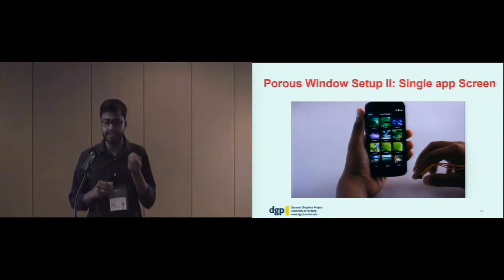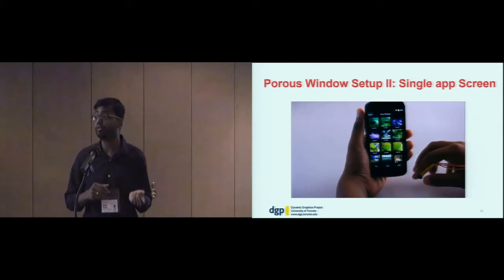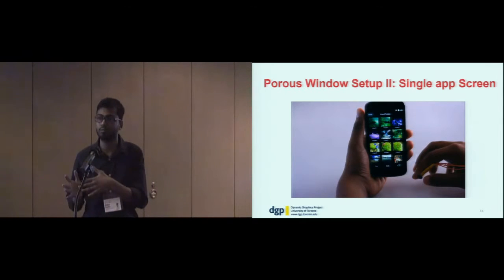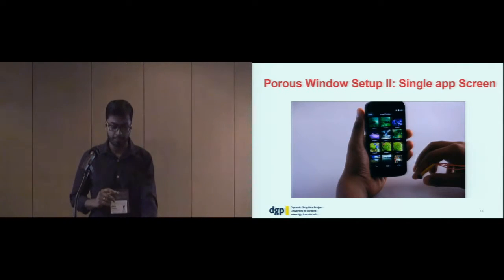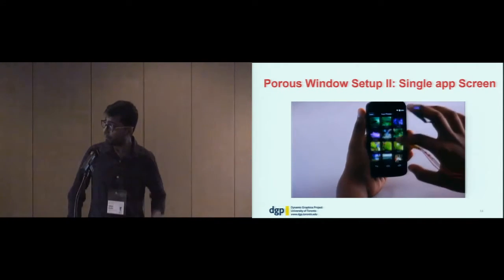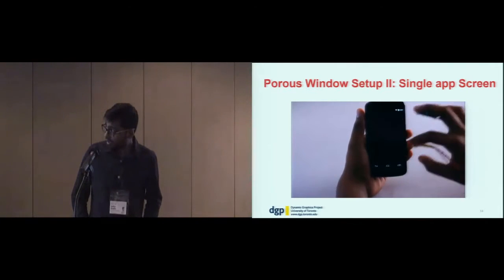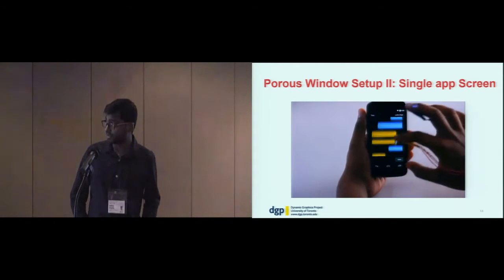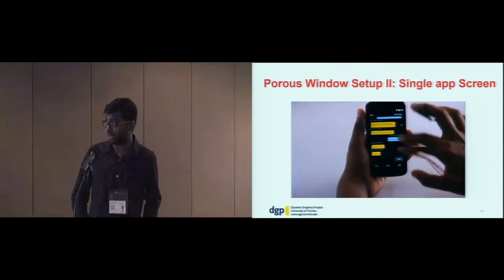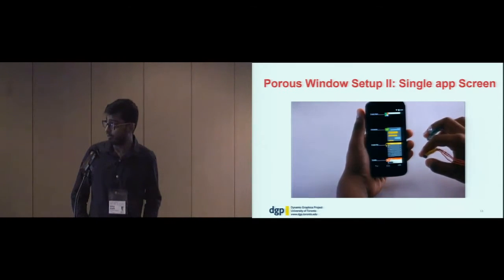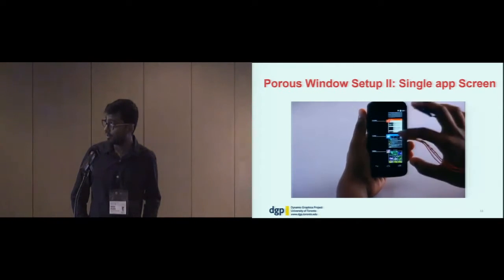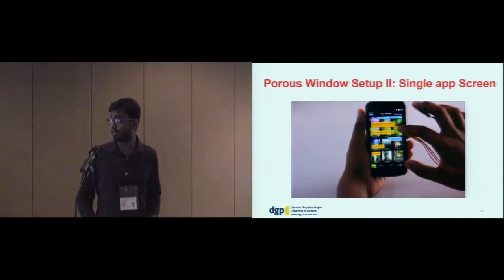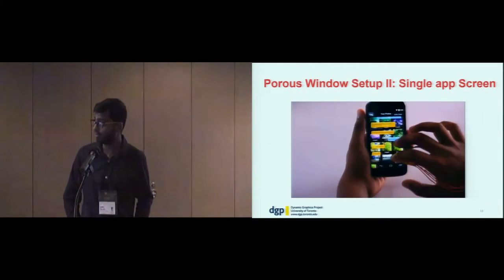If the user wants to open a second app with an already-opened app, we use the window switcher icon that is already there. You can simply switch using the index finger as standard use, but when you use the middle finger to select, it opens the overlaid porous app.